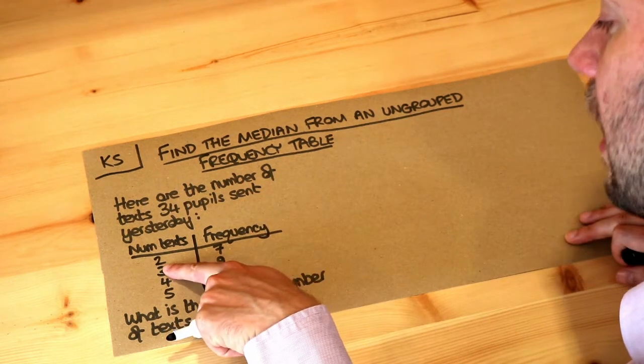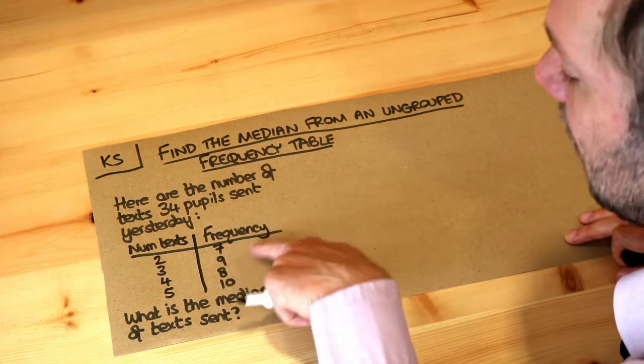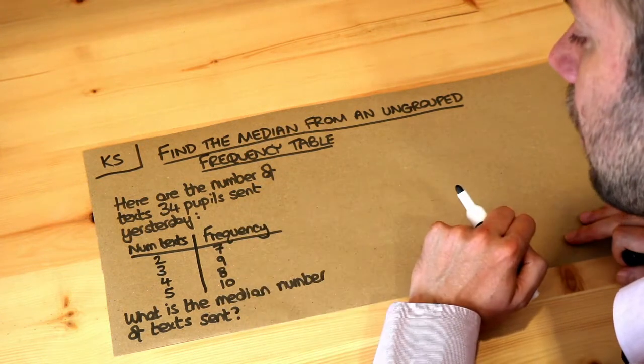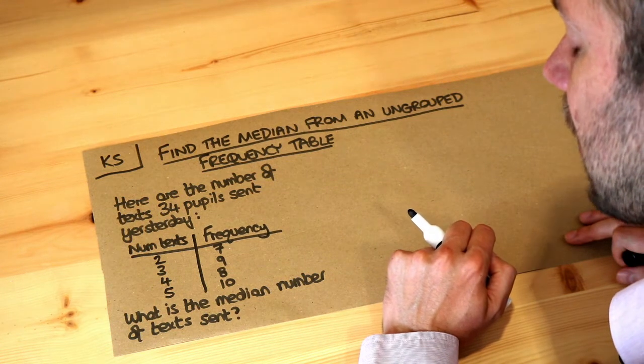So seven people sent two texts, nine people sent three texts. Remember the frequency just means how many people had that value. And we want to work out the median number of texts sent.